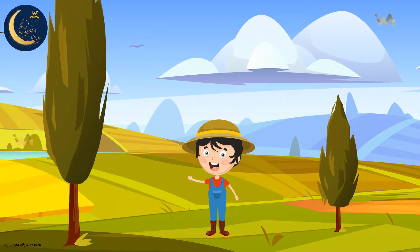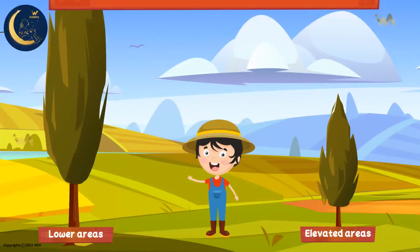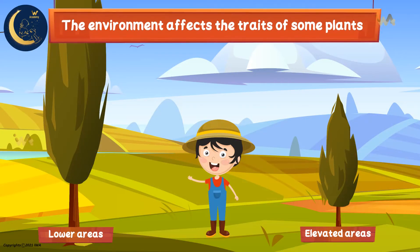The reason for this is that poplar trees are affected by the environment they are in. In the elevated areas, these trees are short, as we see here. But in the lower areas, the poplar trees are very tall. So the environment, my friends, affects the traits of some plants.